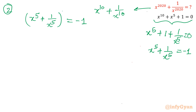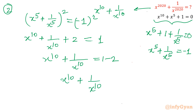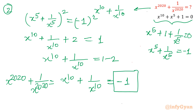I will take x power 5 plus 1 over x power 5 equals negative 1 and square both sides. Squaring gives x power 10 plus 2 plus 1 over x power 10 equals 1, so x power 10 plus 1 over x power 10 equals 1 minus 2 equals negative 1. This is how we can find the answer using algebraic identities — approach number 2.